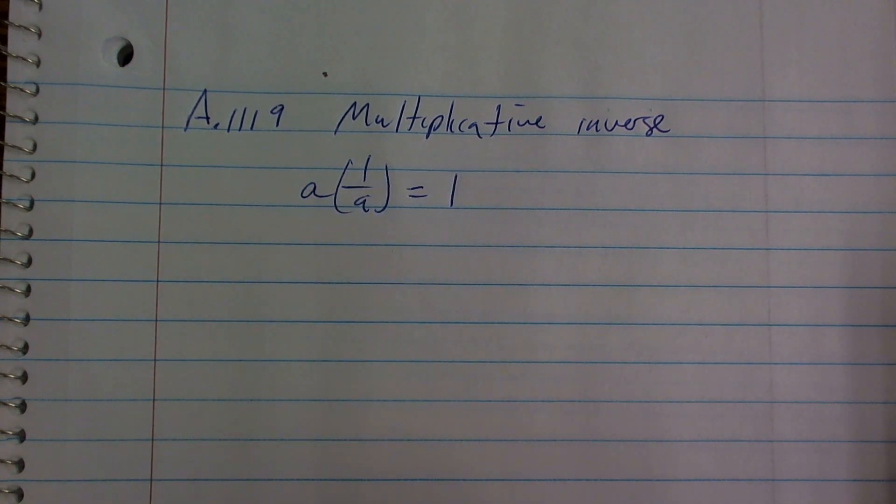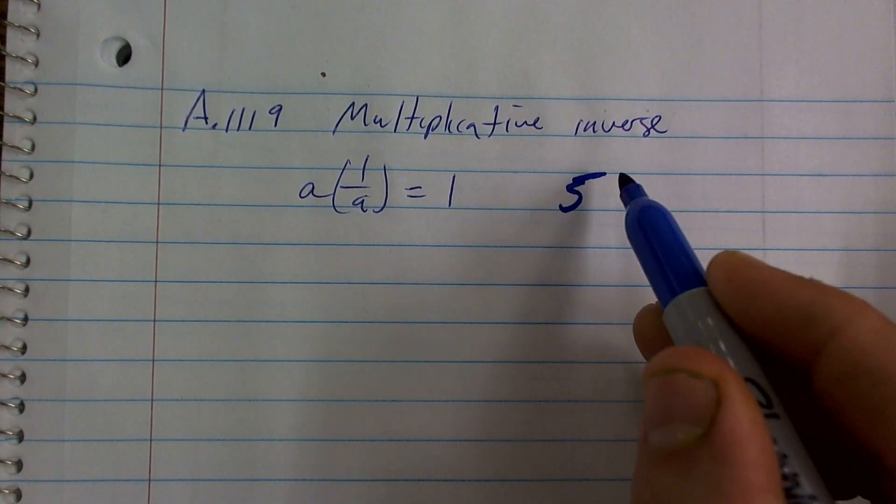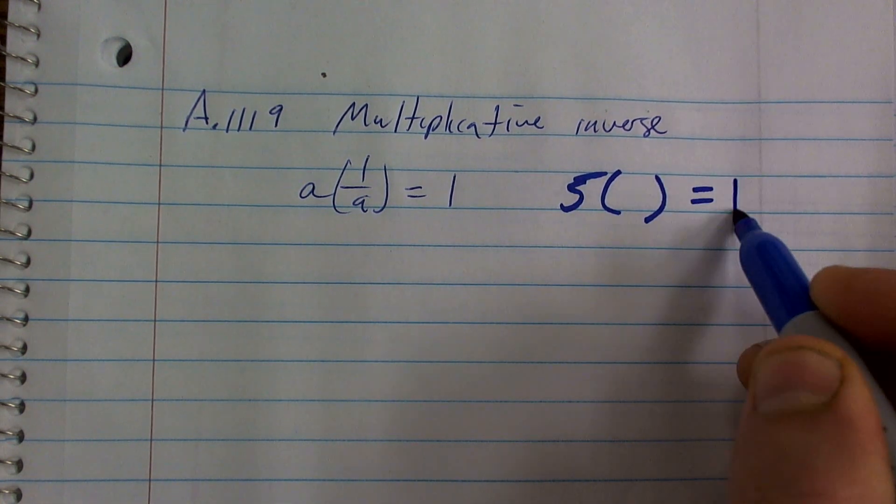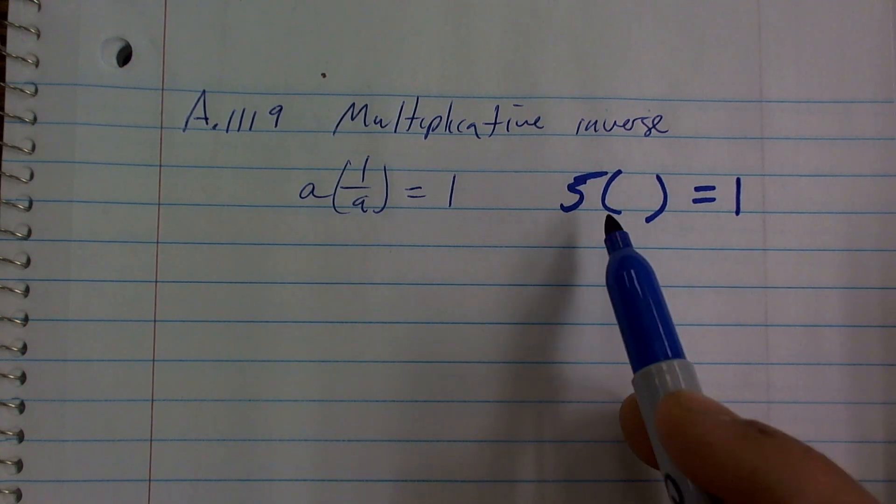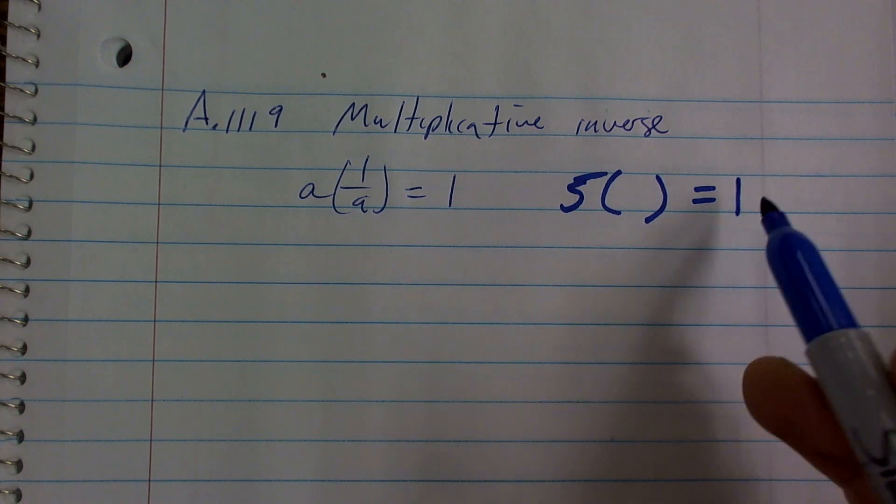So pretty much the multiplicative inverse, if we're going to look at this, let's just take any number, let's just take a number 5. And I want to think, what can I multiply 5 by that's going to get me 1? And that's pretty much what the multiplicative inverse states. If you take a number, multiplying it by what is going to give you back to 1?